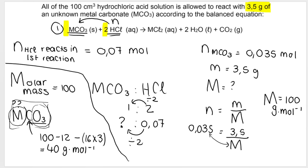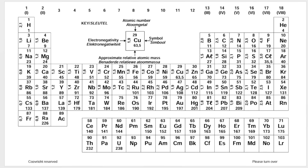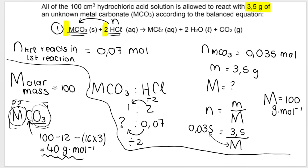That 40 g/mol is the atomic mass of metal M. Looking at the periodic table for a metal with an atomic mass of 40, we find it is calcium (Ca). Therefore, metal M is calcium. Please let me know in the comments what else you'd like to see, and check out the playlist link below for more difficult questions like this one.